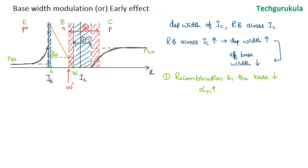As the transport factor increases, we know that alpha is given by the emitter injection efficiency times the transport factor. So alpha would also increase, which means for a given emitter current, the collector current — given by alpha times IE plus ICN — would also increase as alpha increases.